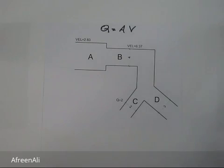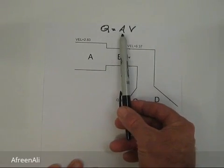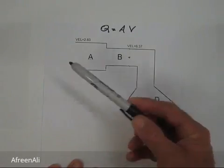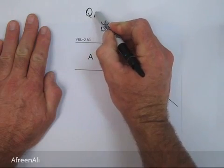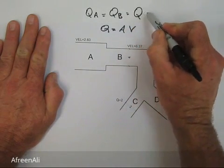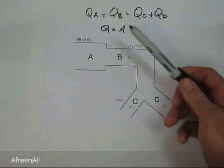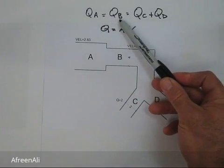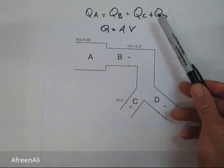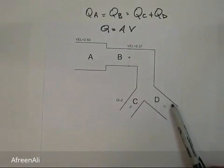In any given system with fluid running through it, we consider that the flow rate is the same throughout the system, because water is considered non-compressible. It's different for a gas system. Using Q equals area times velocity, we can say the flow rate at A, QA, equals the flow rate at B, which also equals the sum of the flow rate at C and the flow rate at D. So: QA equals QB equals QC plus QD — the flow rate at A equals the flow rate at B, which equals the combined flow rate at C and D.